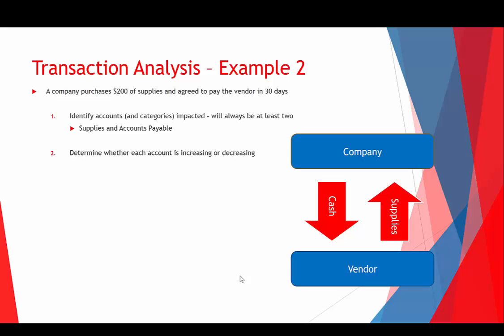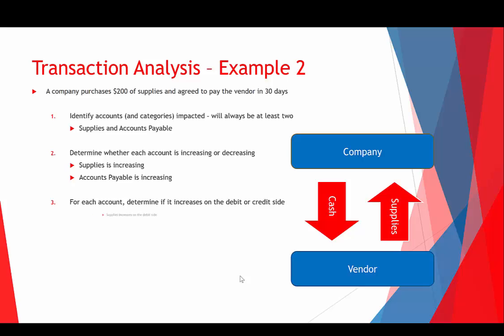Step two — determine whether each account is increasing or decreasing: we got more supplies, so supplies is increasing, and accounts payable is also increasing because we owe more money. This illustrates the point that it doesn't always have to be one account going up and another going down — they can both go up. Think of the framework: assets have to equal liabilities plus equity, so if assets go up, liabilities and equity have to go up as well. Step three: supplies is an asset and increases on the debit side; accounts payable is a liability and increases on the credit side — so we have a debit to supplies and a credit to accounts payable.